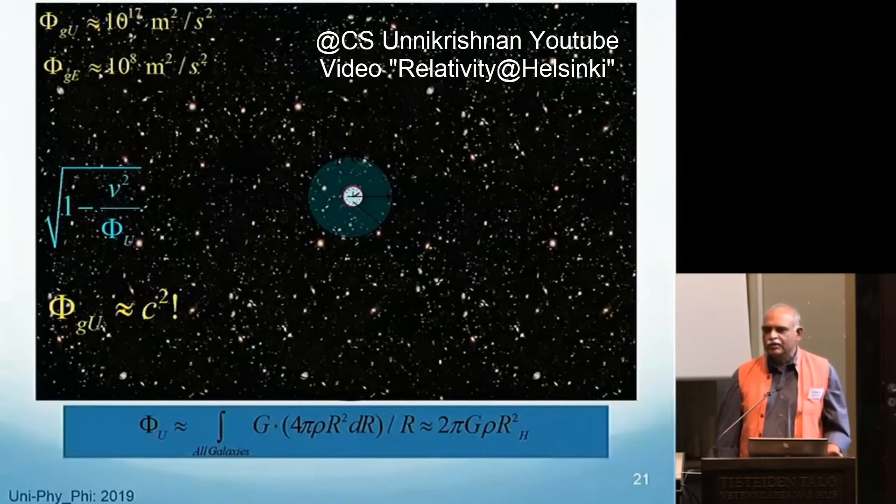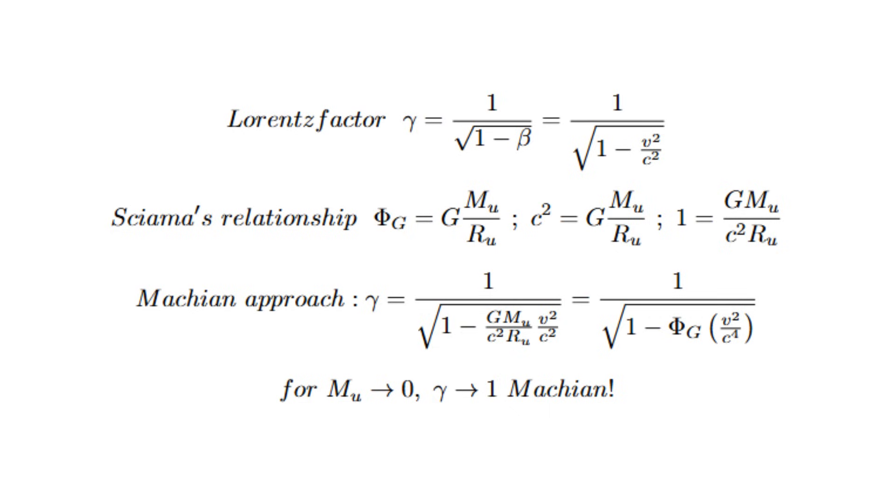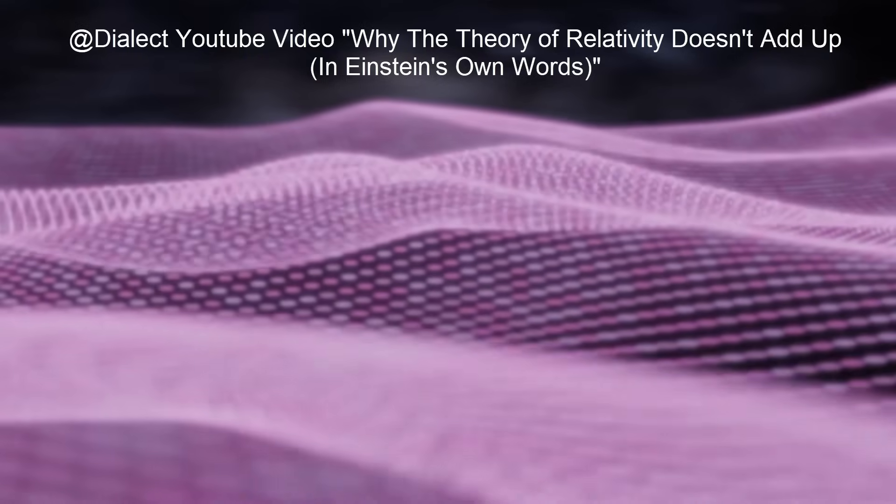But this is not Machian, since one would expect the Lorentz factor to reduce to unity if the mass of the universe tends to zero according to Mach. And this does not happen in Unikrishnan's proposal. The way to achieve this is by multiplying Sciama's relationship with the Lorentz factor so that relativistic effects vanish in empty space a la Mach.